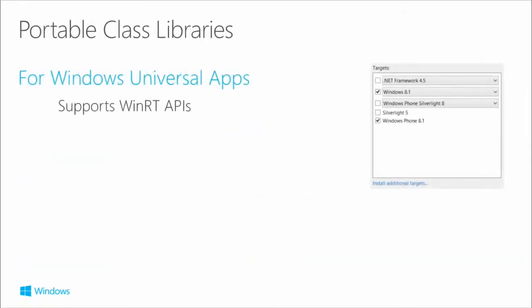Portable Class Libraries: if targeting just the Windows universal application, we can actually support WinRT APIs — the Windows Runtime APIs. Previously you could only support .NET APIs, so use cases were a bit narrow. Now with Windows 8.1 and Windows Phone 8.1 targeting, you have the whole WinRT API set available. Of course, if you add Silverlight or .NET Framework 4 to the supported list, it constrains back down because the PCL only supports the intersection of APIs available across all targeted platforms.